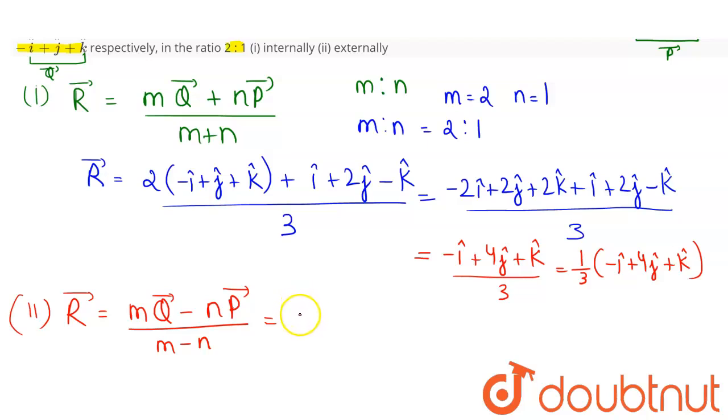So this will be, after multiplying 2 with Q vector, minus 2I cap plus 2J cap plus 2K cap. Now minus, so minus of P vector will be minus I cap minus 2J cap plus K cap, whole divided by M minus N, which will be 2 minus 1 is 1.